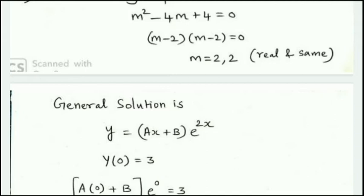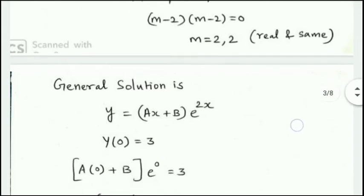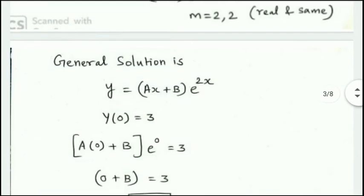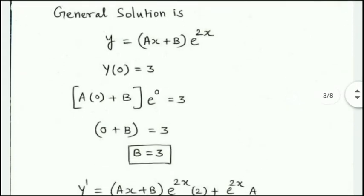Applying initial conditions to find A and B. Using the first condition y(0) = 3: substituting x = 0, y = 3 into y = (Ax + B)e^(2x) gives B = 3.